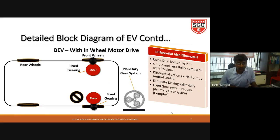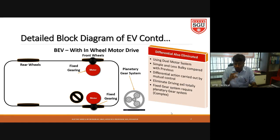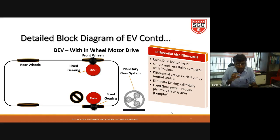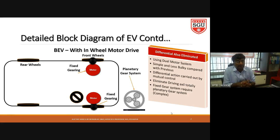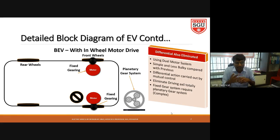The fourth configuration eliminates the differential by using separate motors with fixed gearing for each of the two tires. A planetary gear system is used for controlling the motor speed. Coordination control is needed to perform the duty of the differential. This is a dual motor system that is simpler and less bulky compared to the previous configuration. The driving axle is totally eliminated, but an advanced planetary gearing system is required to control the motor speed across all operating regions.